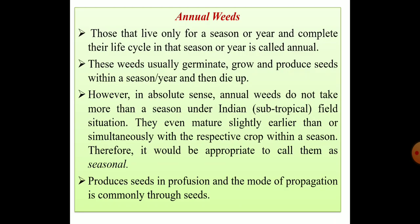Annual weeds, as the name suggests, are those weeds which live only for a season or a year, completing their life cycle in that season or year. These weeds germinate, grow, and produce seeds within a season or year and then die. In the Indian subtropical situation, they do not take more than a season and may mature simultaneously with or slightly earlier than the crop, making it more appropriate to call them seasonals rather than annuals. Their mode of propagation is commonly through seeds, which they produce in profusion.